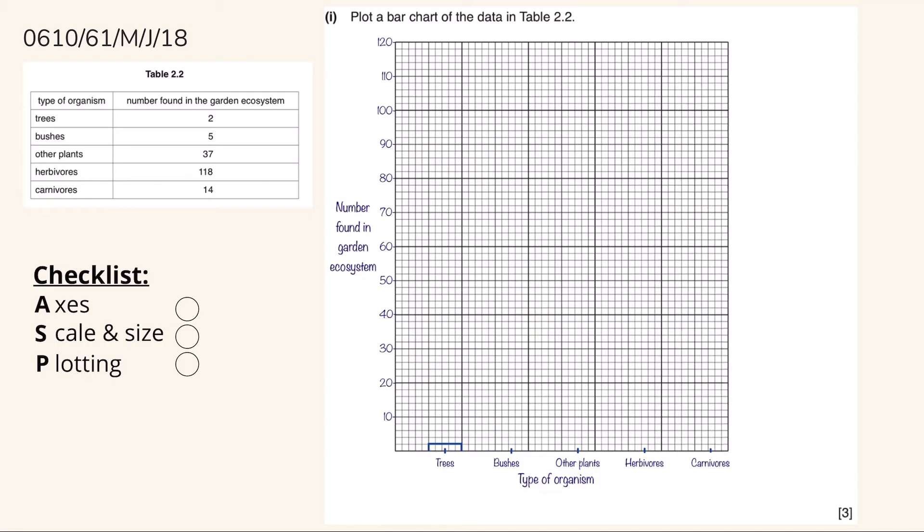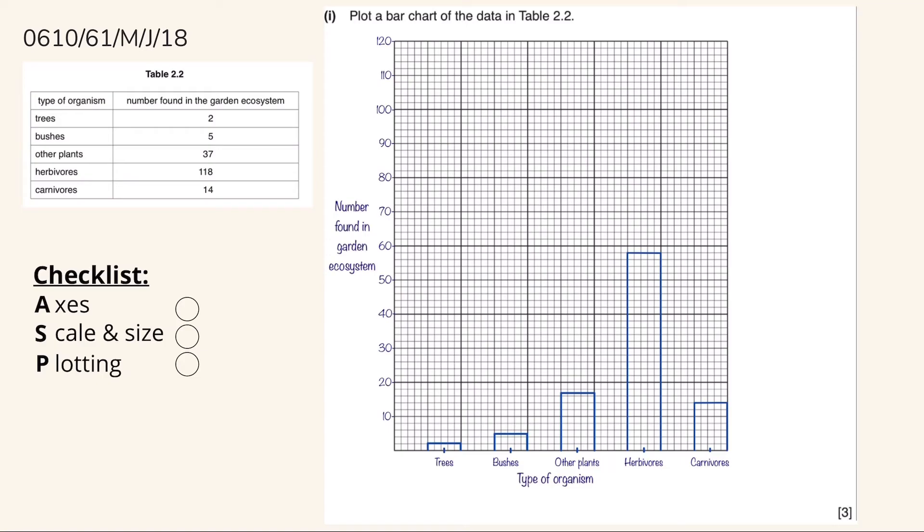So let's start plotting by drawing the bar for the trees. And it should look like this. And a reminder that we should be dividing the values from the table by 2 because each square is equal to 2 in this bar chart. Now that we have applied all the bars for each type of organism, this is what it's supposed to look like in the end.